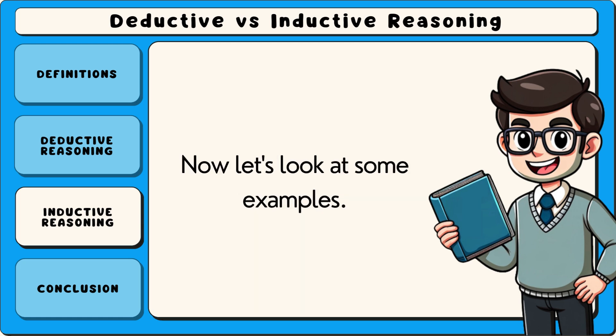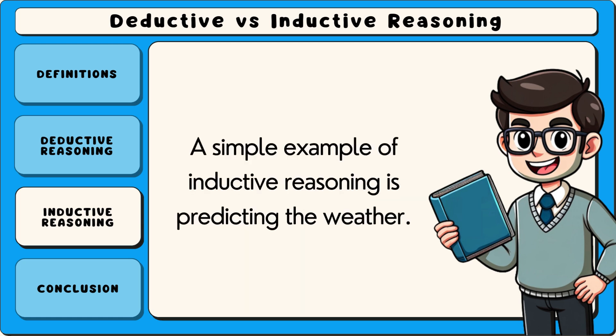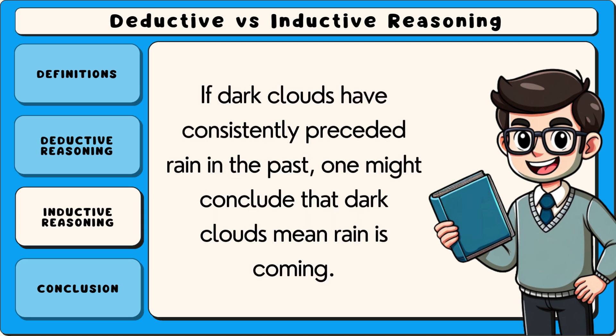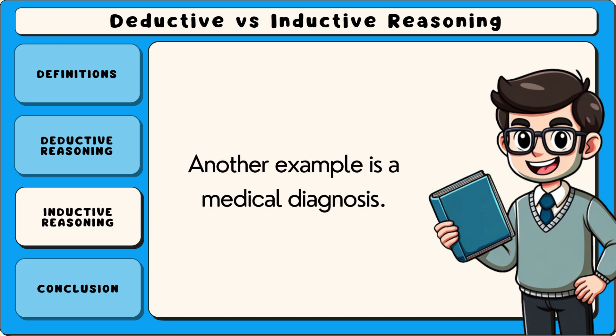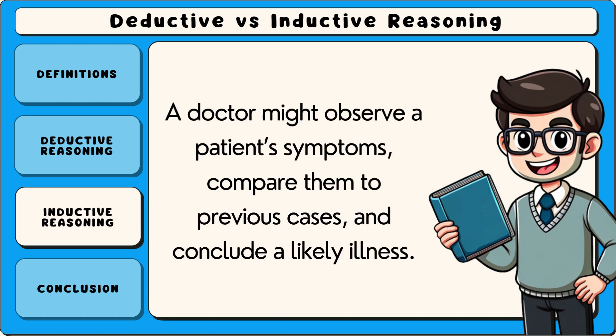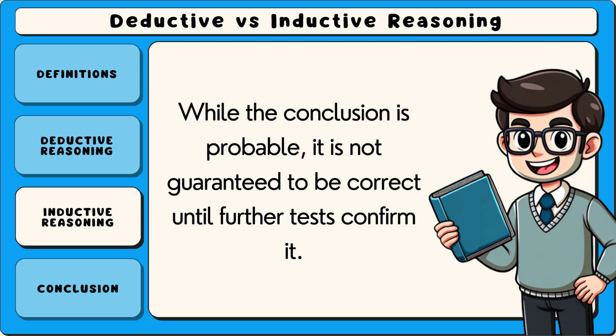A simple example of inductive reasoning is predicting the weather. If dark clouds have consistently preceded rain in the past, one might conclude that dark clouds mean rain is coming. Another example is a medical diagnosis. A doctor might observe a patient's symptoms, compare them to previous cases, and conclude a likely illness. While the conclusion is probable, it is not guaranteed to be correct until further tests confirm it.